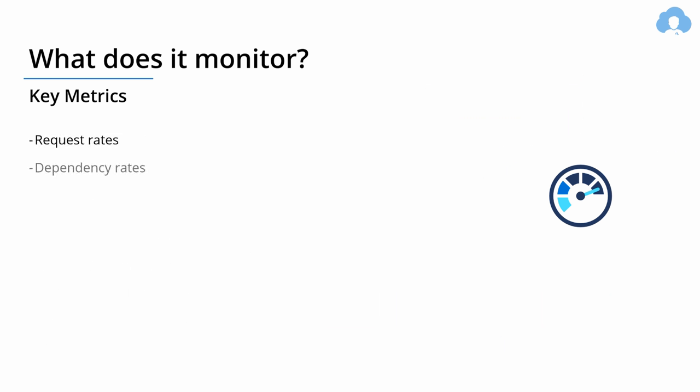What does it track? The most important ones are request rates, dependency rates, and exceptions. Exception logging is one of the most powerful features of this service — it very nicely shows where exactly within your application an exception happened, what caused it, and what you can do to remediate the issue. It will even show you the entire trace of the entire request with user flows, what led to the exception. I very often found myself finding issues with my code without even needing to debug the code itself.